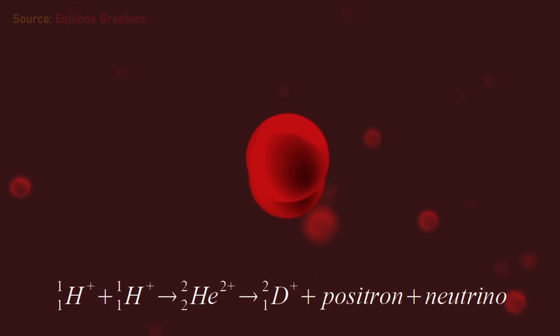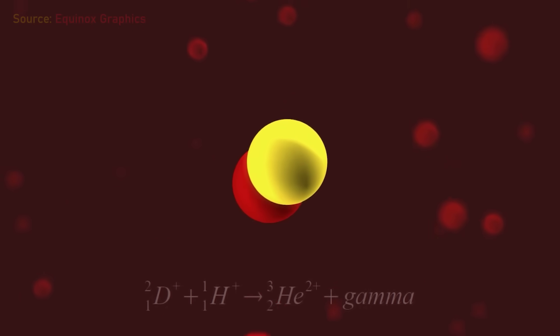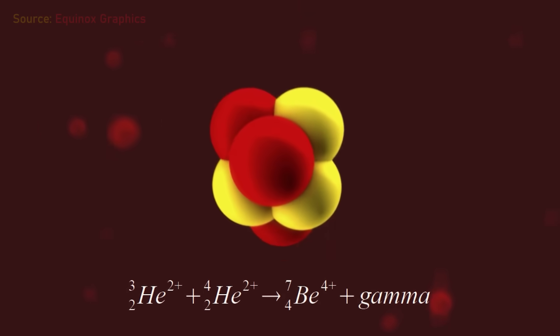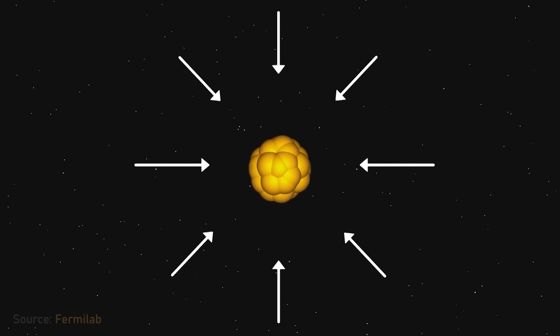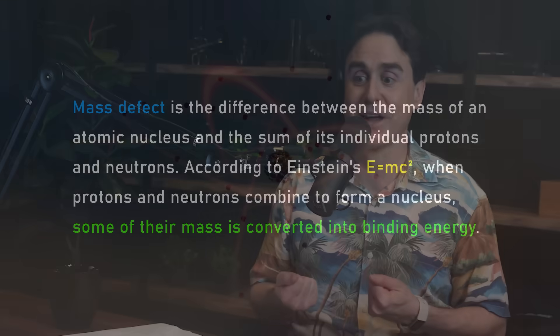Fundamentally, fusion is taking the most common elements in the universe — hydrogen and lightweight isotopes of hydrogen and helium — and fusing those together to make heavier elements. In that process, as you combine atomic nuclei and form heavier nuclei, those nuclei are slightly lighter than the sum of the parts. That comes from quantum mechanics and the strong nuclear force. That mass defect — E=mc² — is also energy, so a tremendous amount of energy is released as you bring those lightweight atomic nuclei together.